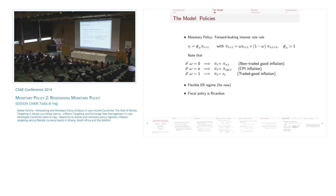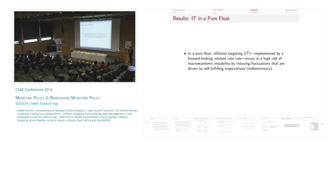Monetary policy is described by a forward-looking interest rate rule where inflation is a weighted average of the two inflation types with weight omega, embedding different cases. When omega equals zero, the rule responds to non-traded goods inflation; when omega equals alpha, it corresponds to CPI inflation targeting; when omega equals one, it responds to traded goods inflation. For now I assume pure float. Fiscal policy is set in the background to ensure the government budget constraint is always satisfied.